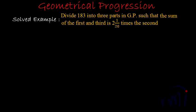In this video we are going to handle a slightly tricky problem based on geometrical progression. As you can see, I have already noted down the problem statement. It says: divide 183 into three parts in GP such that the sum of the first and third is 2 and 1/20 times the second.